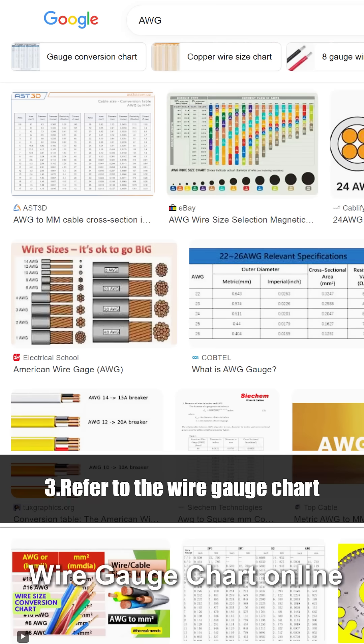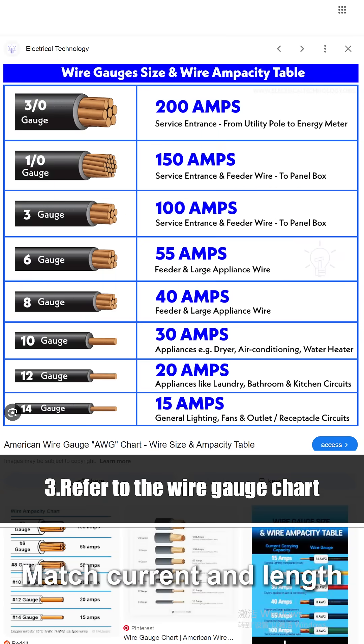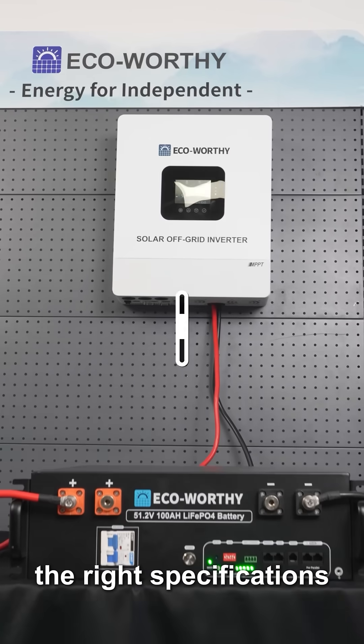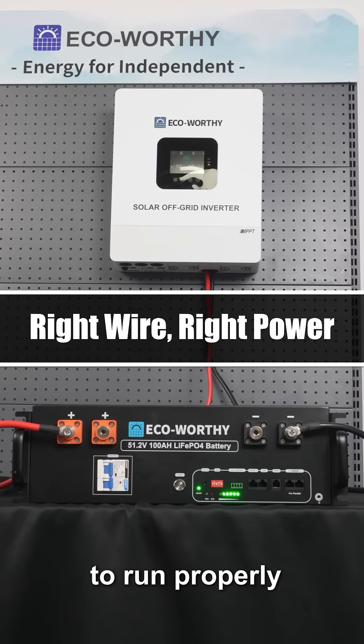Check American Wire Gauge Chart online. Match current and length to find max safe ampacity. Pick one gauge larger than calculated for safety margin. This way, we can select the right specifications for our system to run properly.